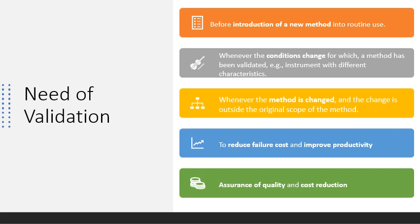Whenever the conditions change for which a method has been validated — for example, an instrument with different characteristics — it's important to understand that validation in itself does not improve processes, but confirms that the processes have been properly developed and are under control. If a condition is changed, such as an established method used in a different lab, different condition, or with different staff, the method has to be revalidated. Also, whenever the method is changed and the change is outside the original scope of the method, revalidation is required.